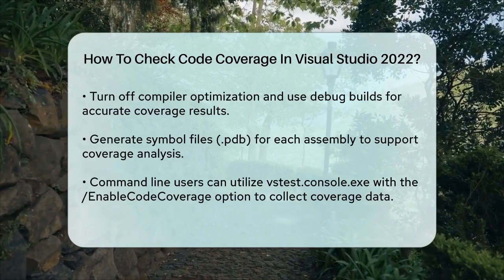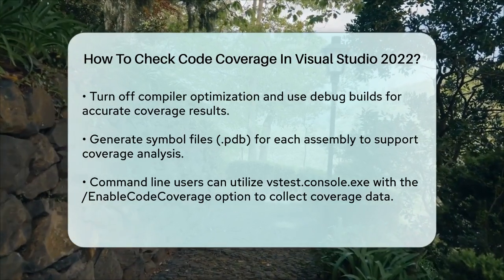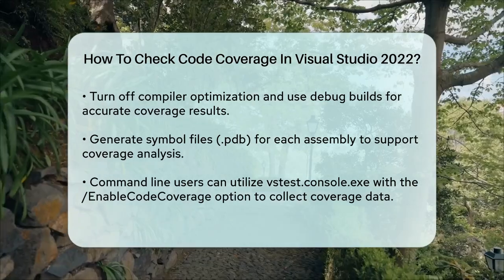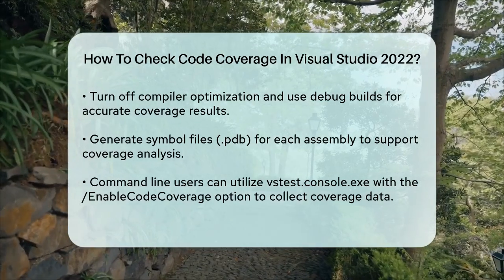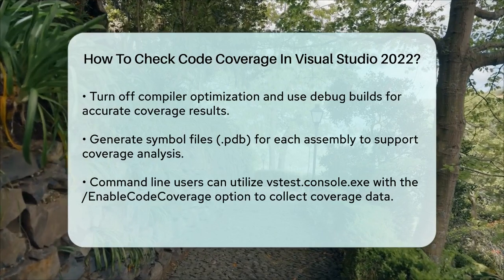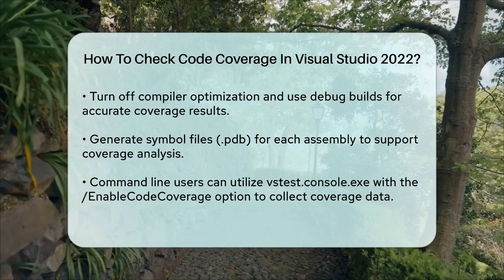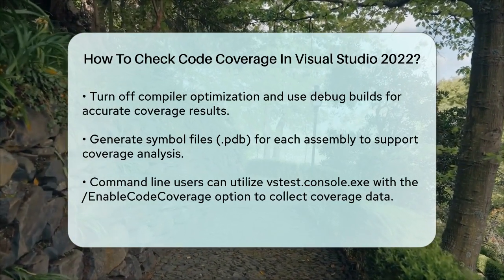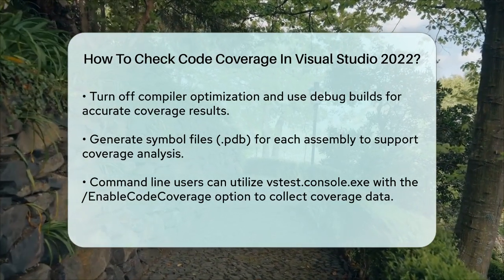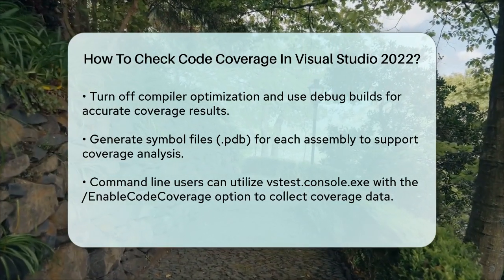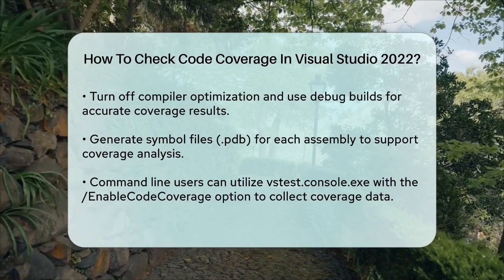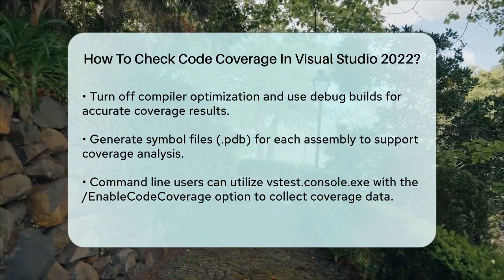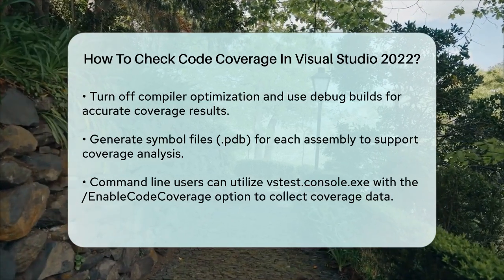In summary, checking code coverage in Visual Studio 2022 involves using the built-in tools in the Enterprise Edition or the Find Code Coverage extension for Community Edition, customizing your run settings, and ensuring you're following best practices for accurate results. This helps you identify which parts of your code need more testing, ensuring your project is robust and reliable.